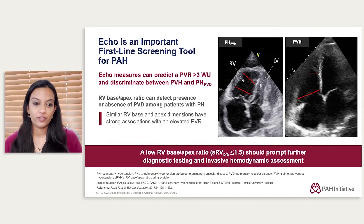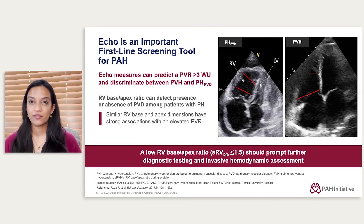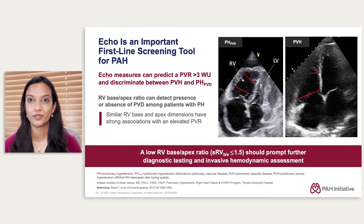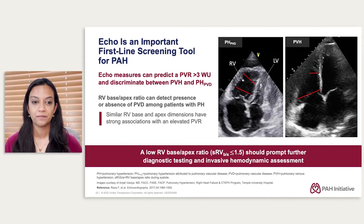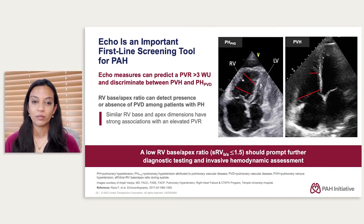ECHO is a highly available and helpful noninvasive assessment that can give us information on the hemodynamic right ventricular burden, measuring RV structure and function. It's a first-line screening tool that can help predict if pulmonary vascular resistance is elevated. It can also give us direct clues to discriminate between pulmonary venous hypertension — WHO group 2, where left-sided filling pressure is elevated and the wedge pressure is elevated — versus PH due to pulmonary vascular disease, where pulmonary vascular resistance is elevated in the context of normal left heart filling pressures.